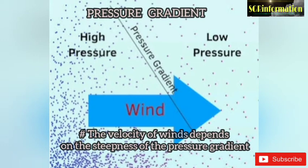The velocity of winds depends on the steepness of the pressure gradient. What is pressure gradient? Differences in horizontal distribution of atmospheric pressure drive the winds from areas of high pressure to areas of low pressure. The rate of change of pressure per unit distance is called pressure gradient.